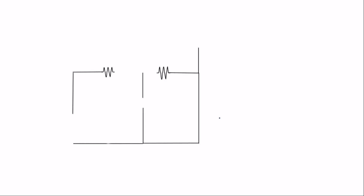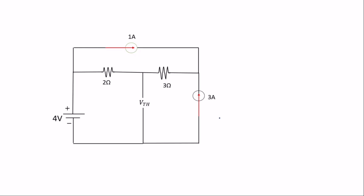The first thing we need to do is replace the one-ohm resistor with a Thevenin voltage. This is the principle of Thevenin's theorem — you replace where you want to find the current with the Thevenin voltage. After finding the Thevenin voltage and Thevenin resistance, since we are in series, we can find the current. The Thevenin voltage now becomes a source.